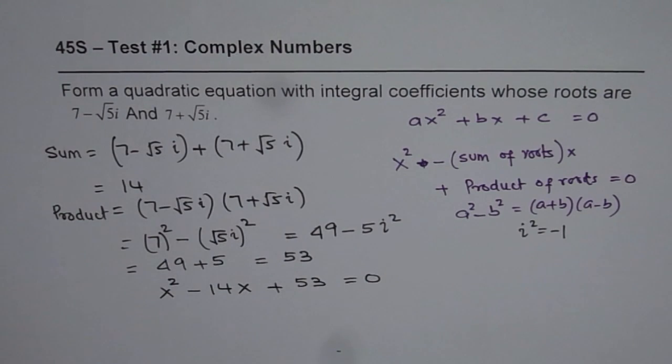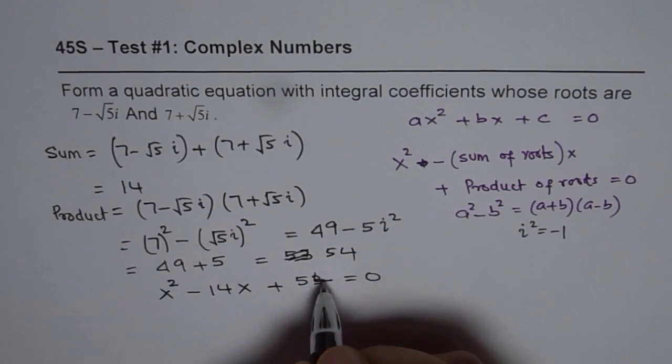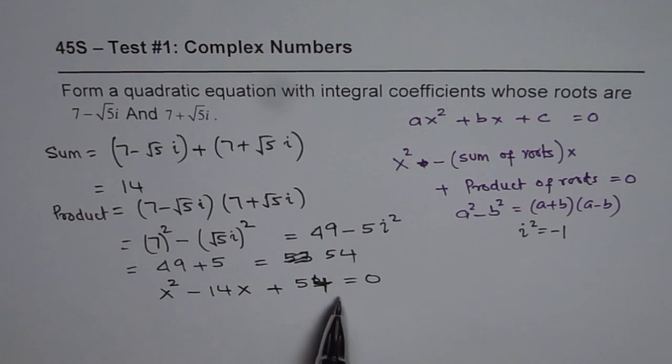Which will have roots as 7 minus square root 5i plus 7 plus square root 5i. I hope you appreciate this step. This is 54, I am sorry. 54, okay. So 54. So that is our final answer. So this is one way of doing it.